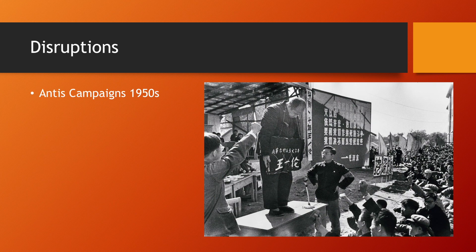Well, you had the anti-campaigns in the 1950s, where 800,000 people were killed by the first half of 1951. Many of these killed were doctors. Remember, the anti-campaigns targeted bourgeois capitalist elements, and doctors were considered bourgeois capitalist elements. Even Mao's doctor, Lee Jusui, had to hide and cover up his bourgeois background, lest he face persecution in these struggle meetings.